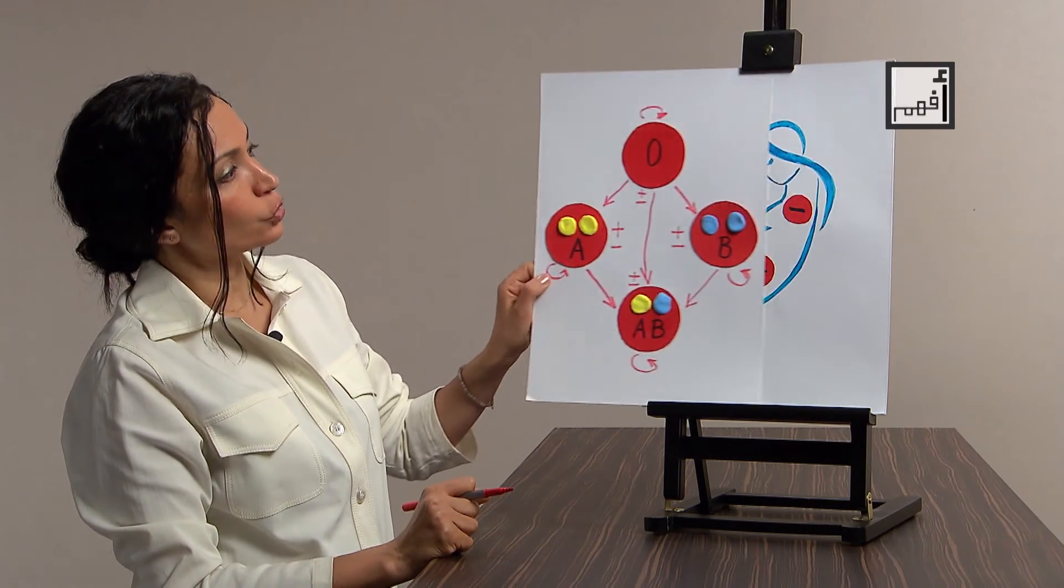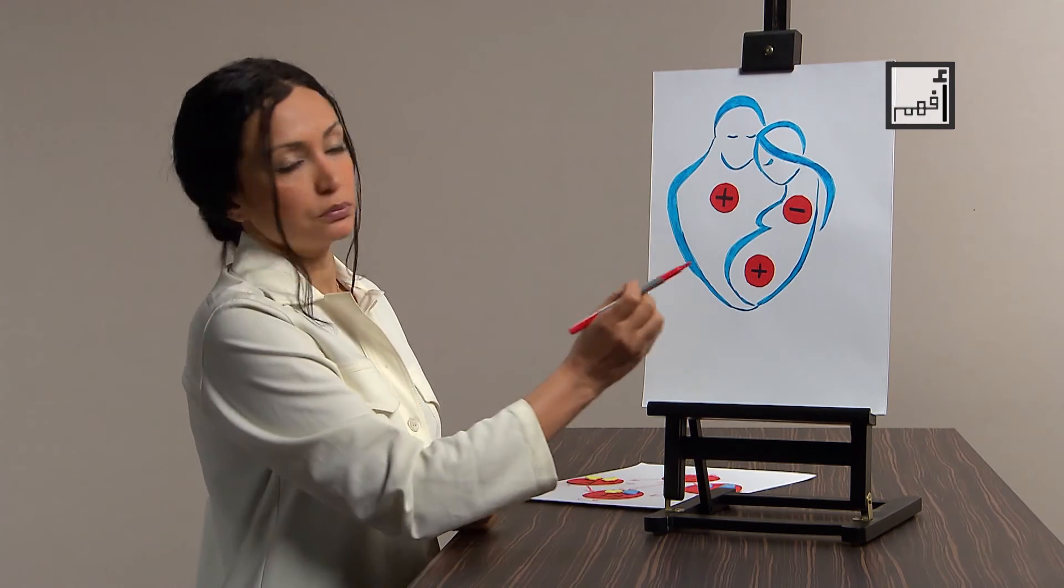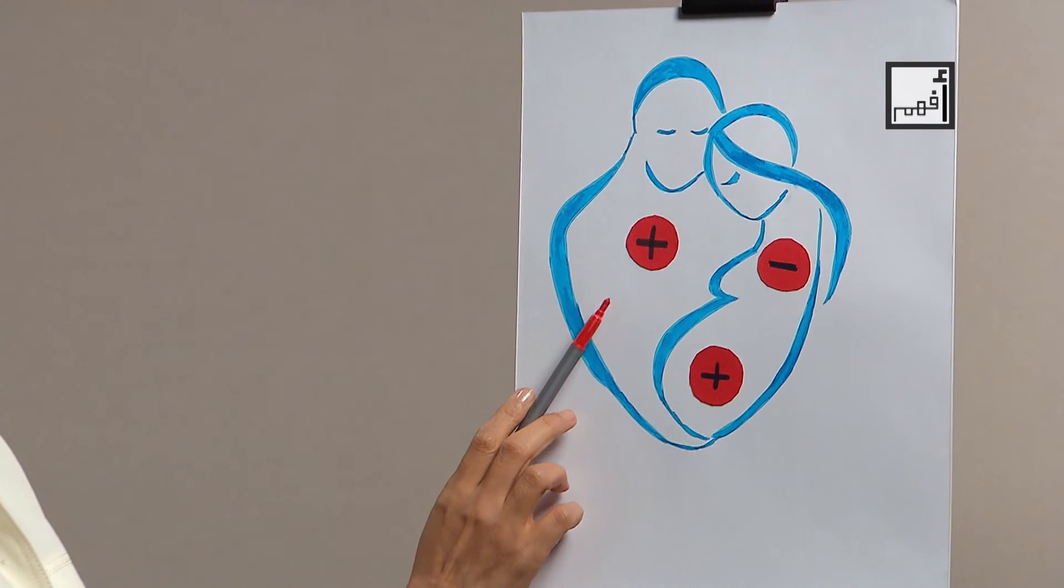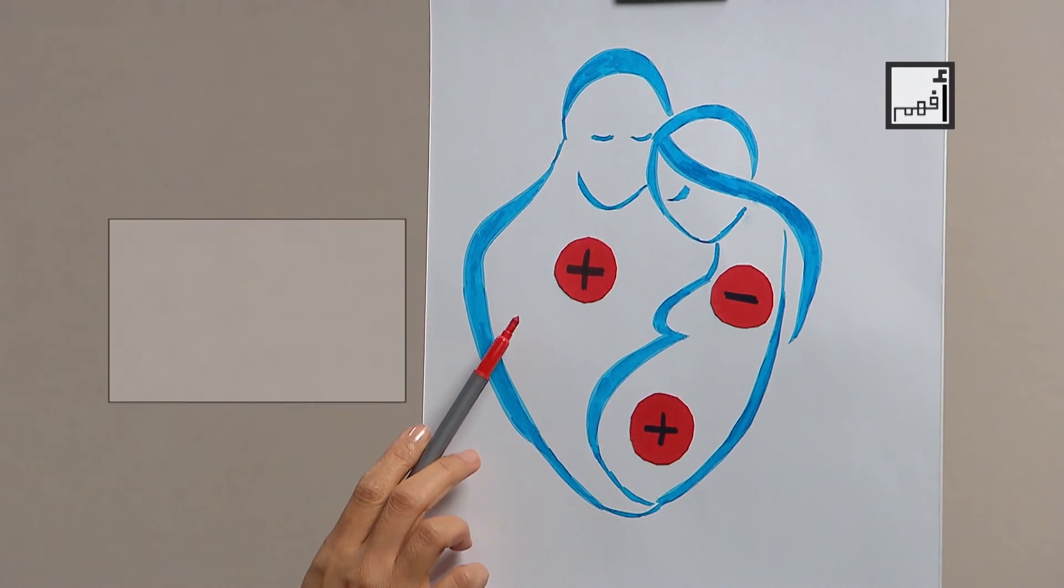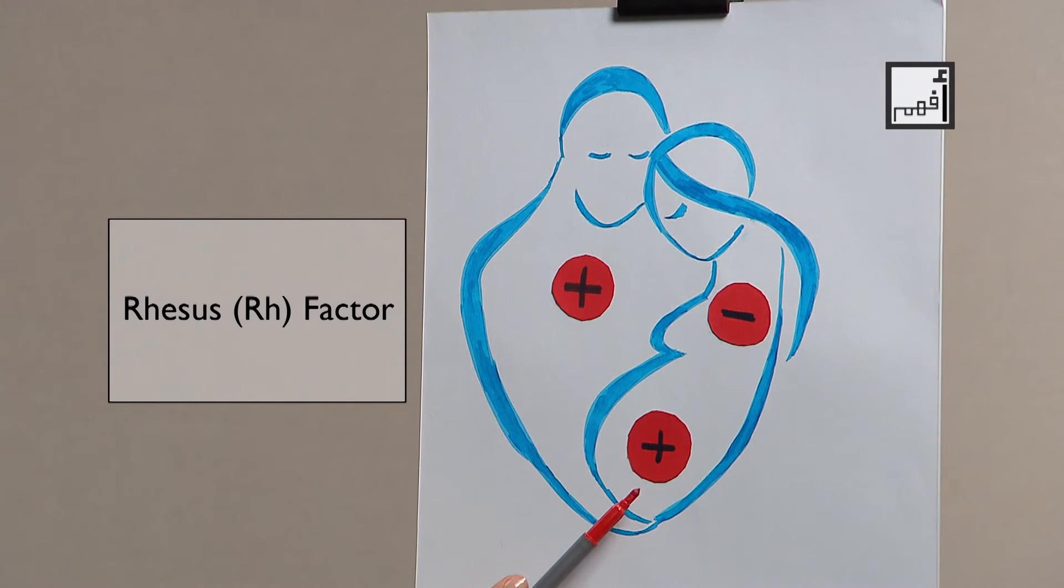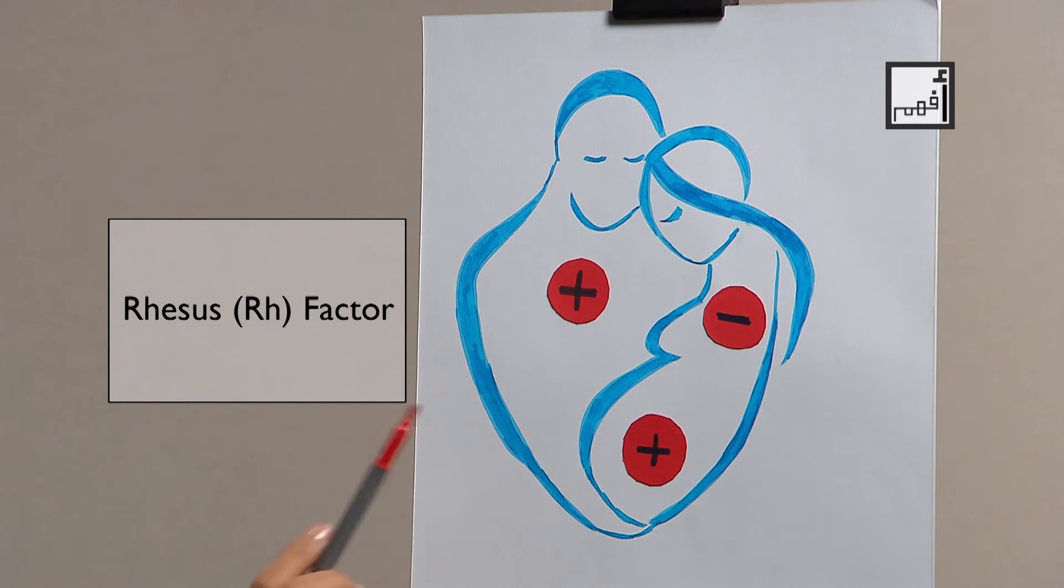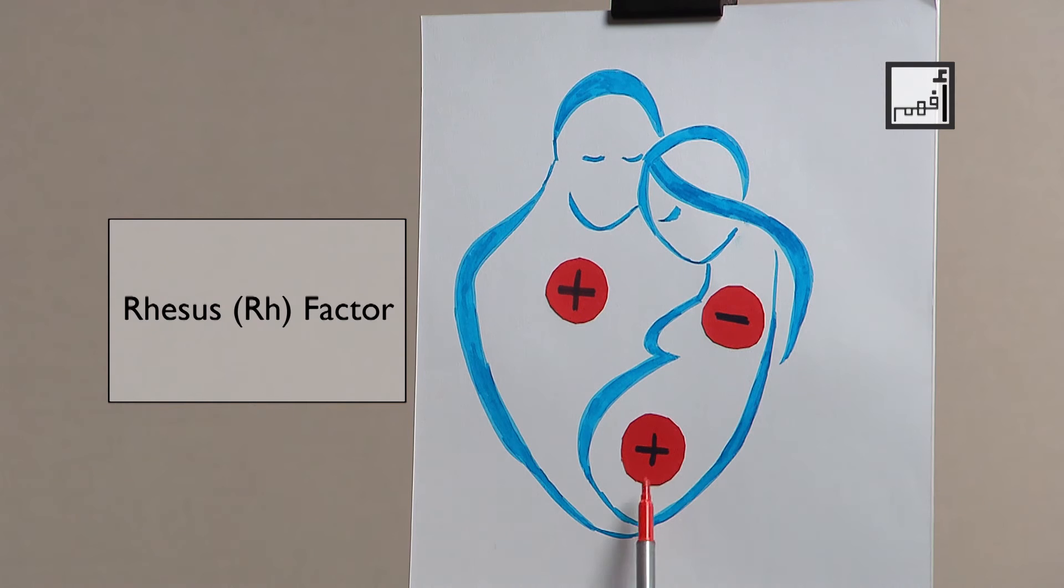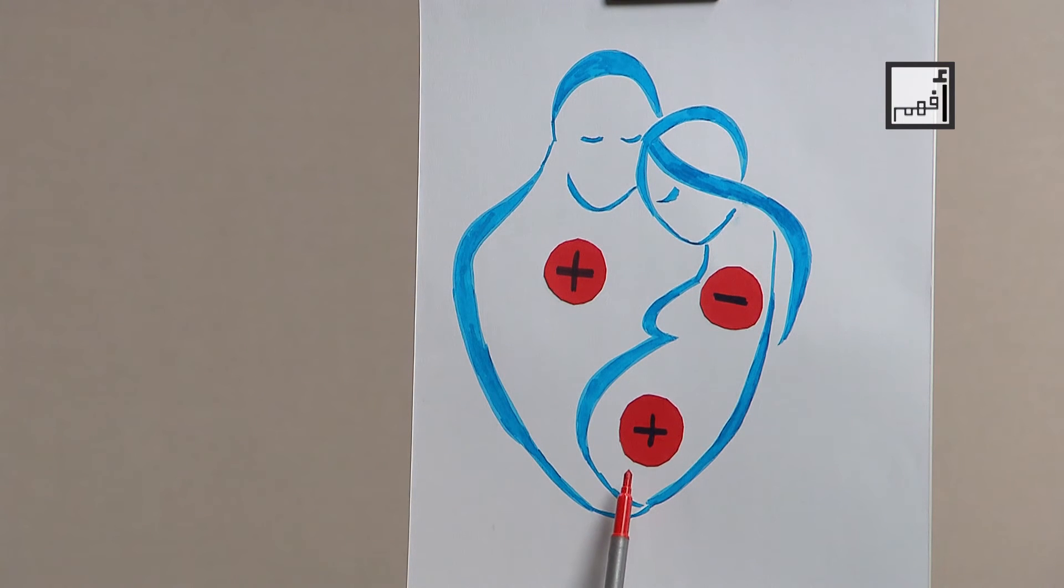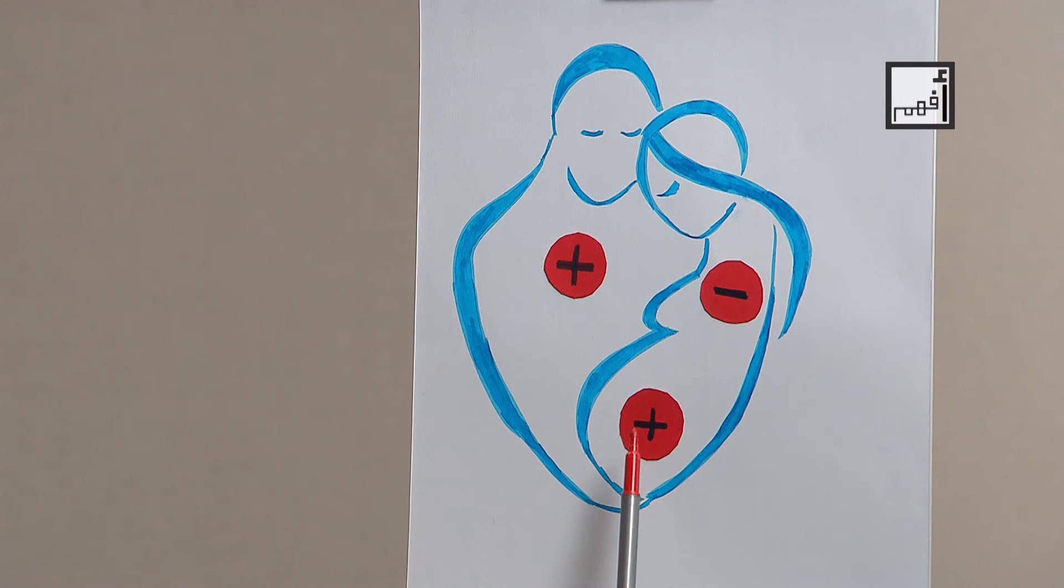One common example is when the parents are different in the rhesus factor, especially when the mother is negative and the father is positive. Rhesus factor may be inherited by the baby from his father's side. So the mother would recognize the blood of her baby as foreign body and would react against it. The first pregnancy may pass safely. But during delivery, some of the fetal blood may enter the maternal circulation and the body of the mother will recognize the rhesus factor, the positive rhesus factor, as foreign body and will form antibodies against it.